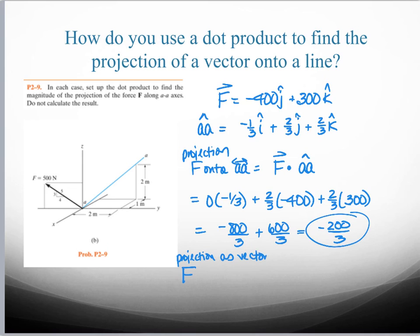And so I'm going to get minus 800/3 plus 600/3, so that's minus 200/3. And so that's how big it is. If I want to write that projection as a vector, we'll call it F parallel, the way that we would do it is we would have taken this dot product, but then we would also multiply it again by the unit vector of AA.